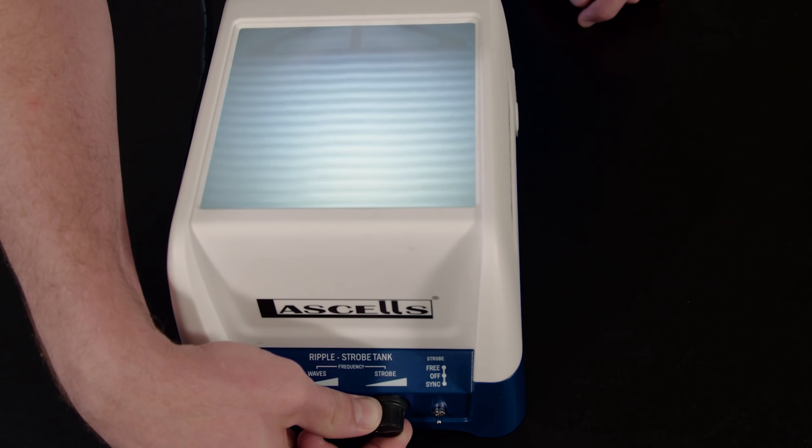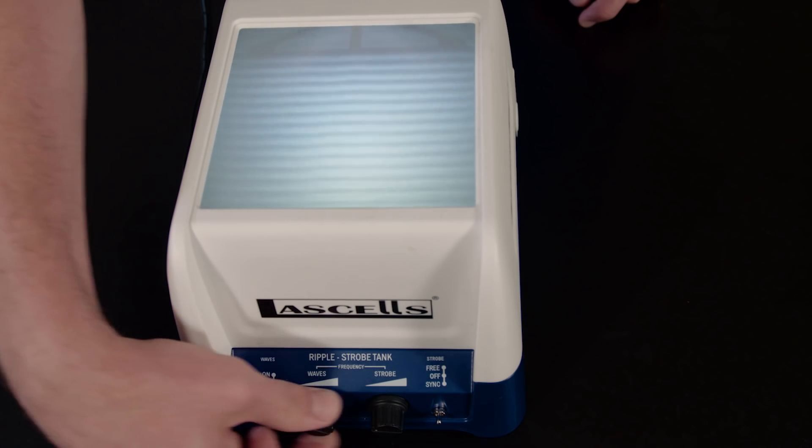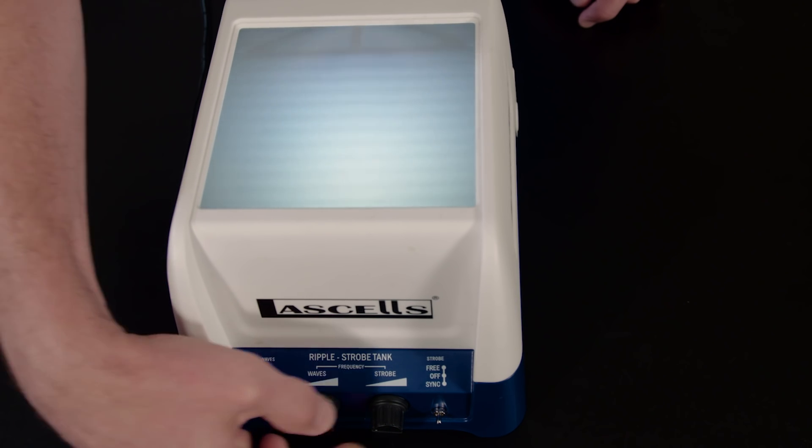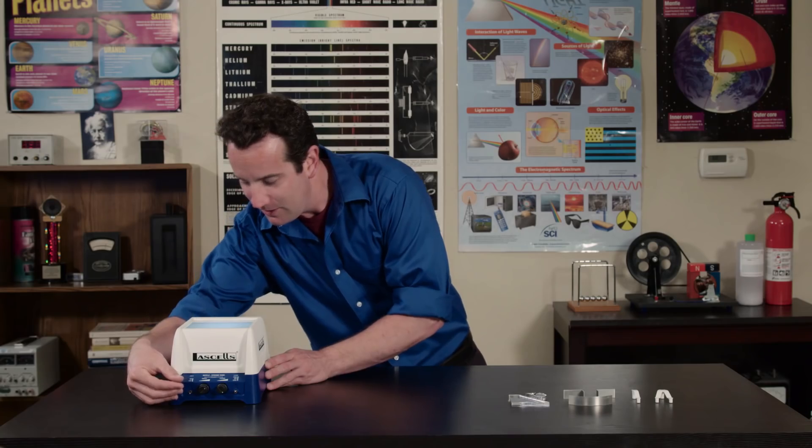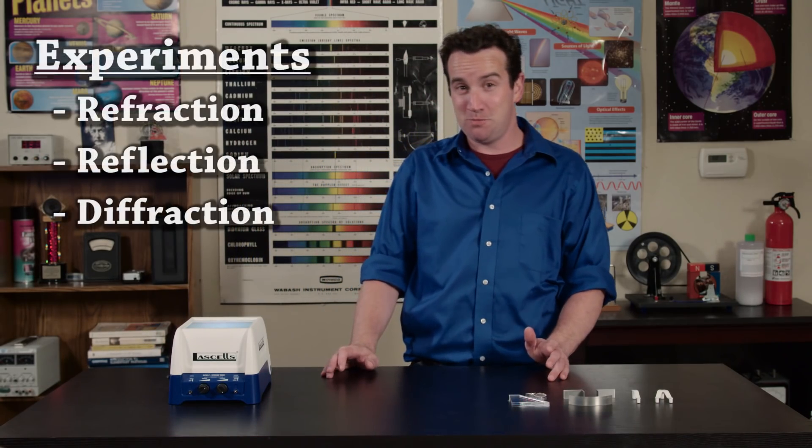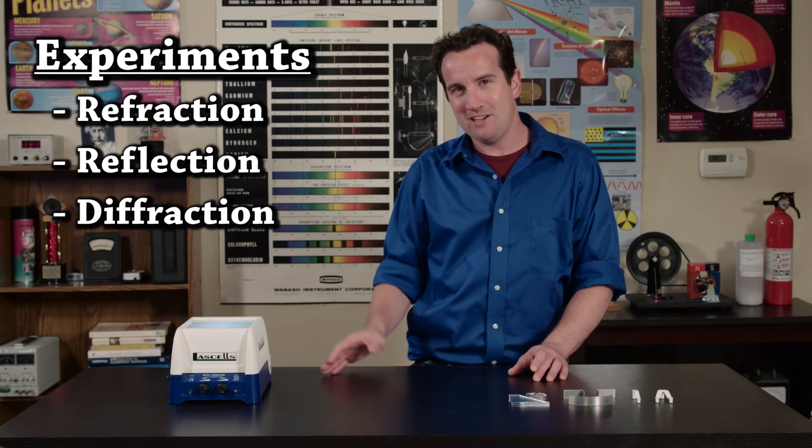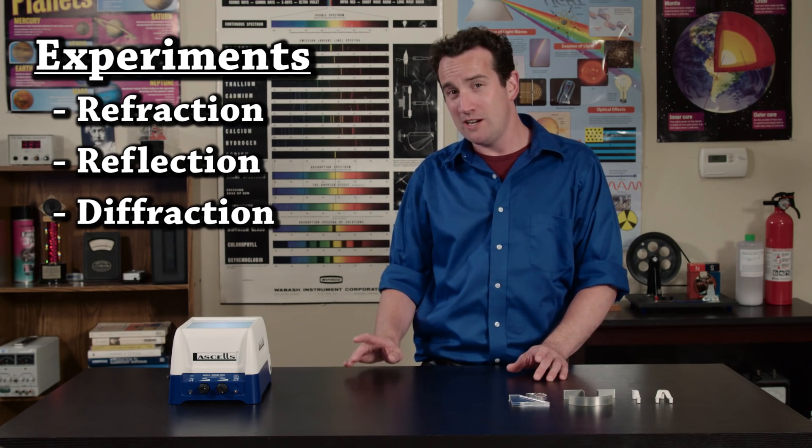I prefer to have the waves appear to move slowly, which helps when you point out specific effects. For example, if you want to measure the wavelength, now it's time to try a few experiments. The mini ripple tank can demonstrate the properties of waves, including those identifying properties of light waves.